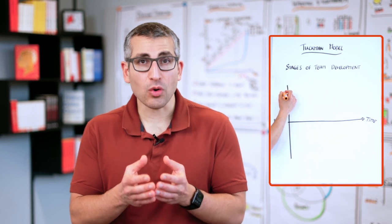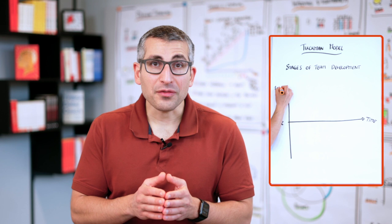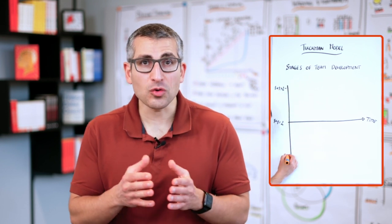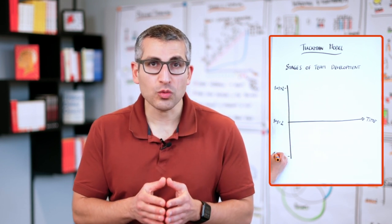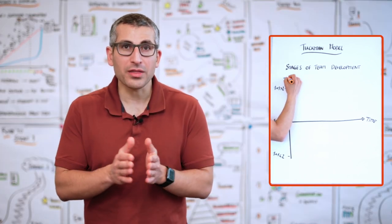Once a team becomes more effective, one plus one is greater than two. But if they are less effective, if they have too much friction, one plus one would be less than two. Based on these two axes, we can now look at the four stages.